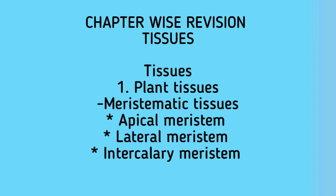Apical meristem is present at the growing tips of roots and stem, and its function is to increase the length of the plant body. Lateral meristem is present on the lateral sides and helps increase the girth of the stem and root. Intercalary meristem is situated at the base of the leaf or internodes, and its function is to help in the easy bending of leaves.